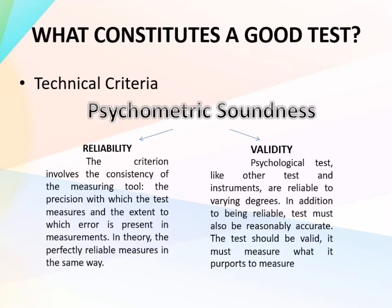Another component under psychometric soundness is validity. Psychological tests, like other tests and instruments, are reliable to varying degrees. In addition to being reliable, tests must also be reasonably accurate — the test should be valid and must measure what it purports to measure. When talking about validity, it must measure what it intends to measure. For example, the Binet test designed to measure intelligence must truly measure that construct to be valid.